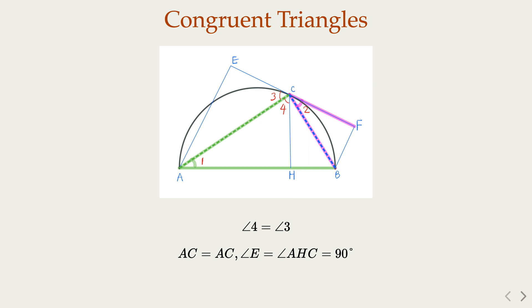In other words, angle E is 90 degrees. AHC is 90 degrees. So the two triangles are congruent. ACE and ACH.